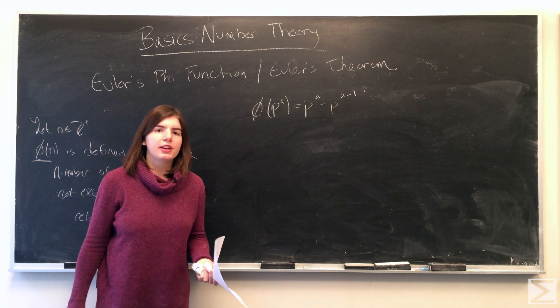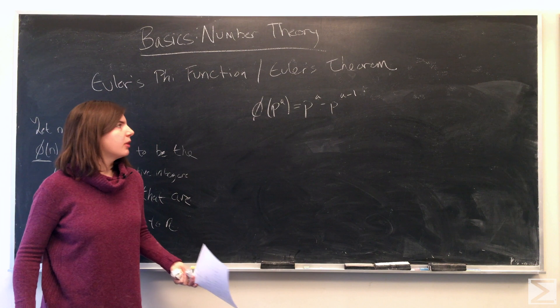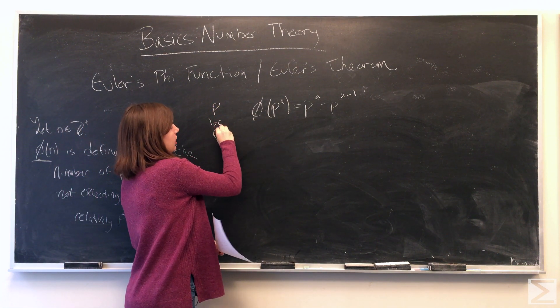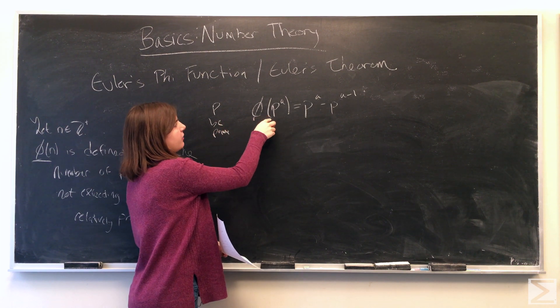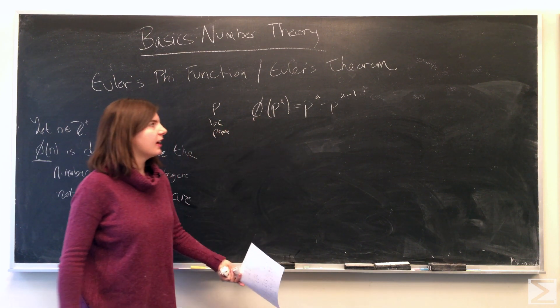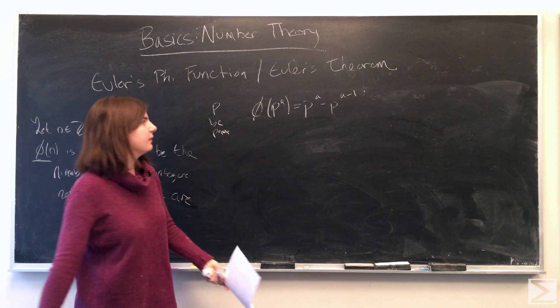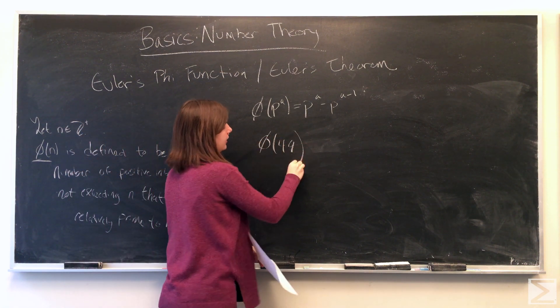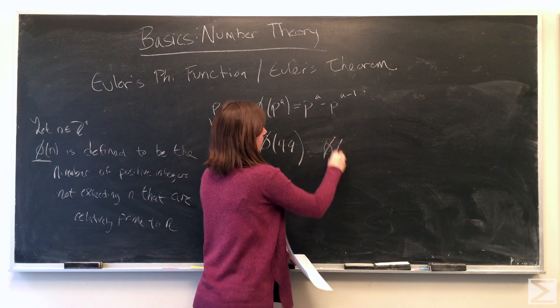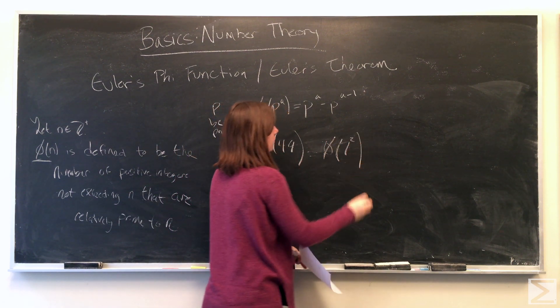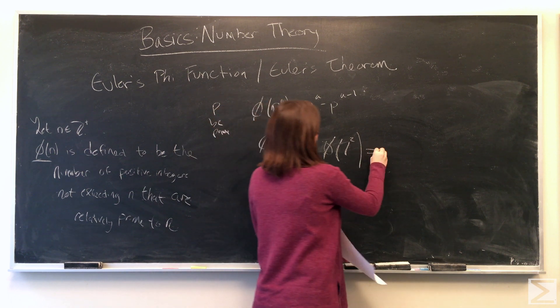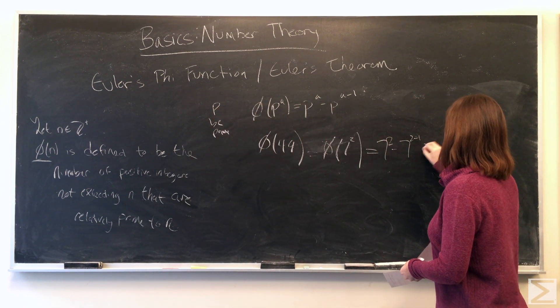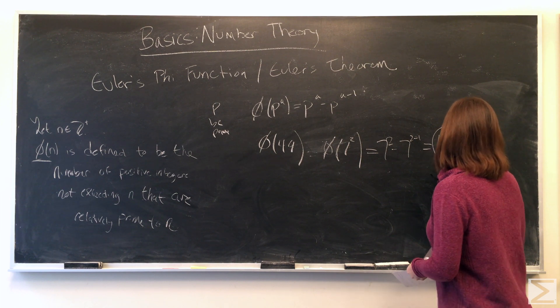So one way to calculate the phi of a composite number is that if we let p be prime and a is an integer, then the phi of p to the a is equal to p to the a minus p to the a minus 1. For example, the phi of 49, that can be written as 7 squared, which is 7 squared minus 7, so it's 42.